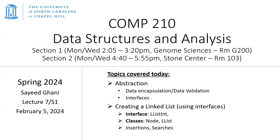We'll be talking about interfaces, and in order to introduce that concept you need to understand abstraction. Abstraction also covers other aspects of Java such as data encapsulation and data validation. All of those concepts are part of abstraction. Once we've understood interfaces, we're going to implement the linked list concept. We'll first introduce an interface called LinkedListInt, and then we're going to create two classes to help us implement a linked list.